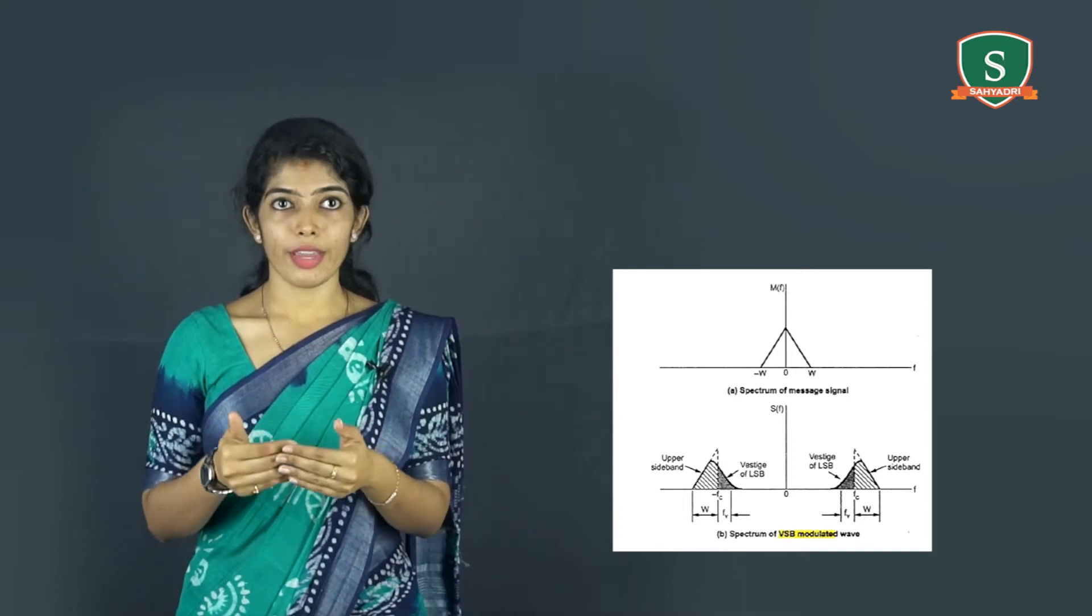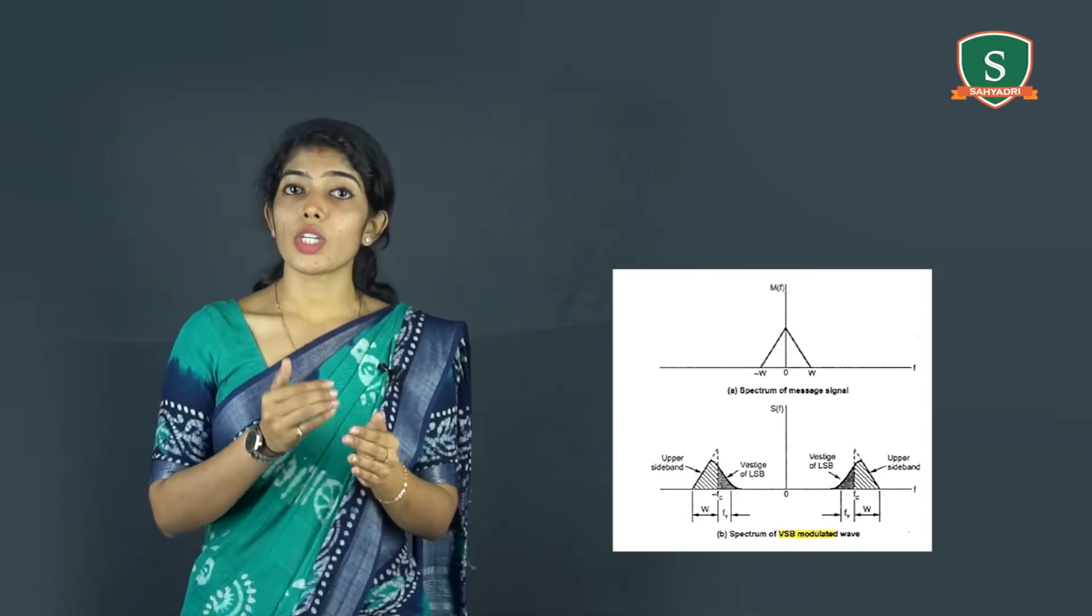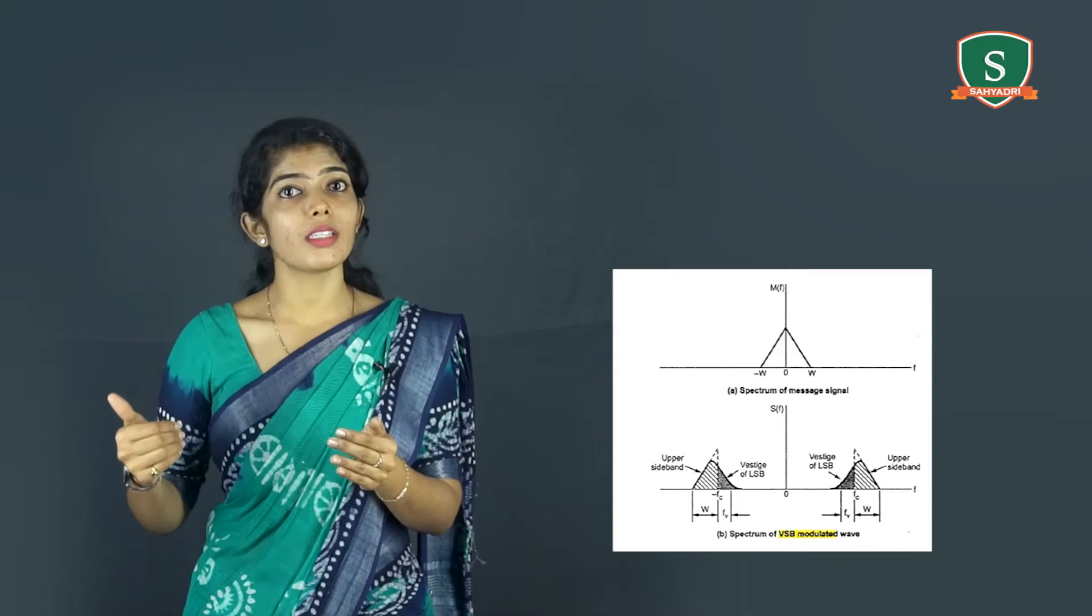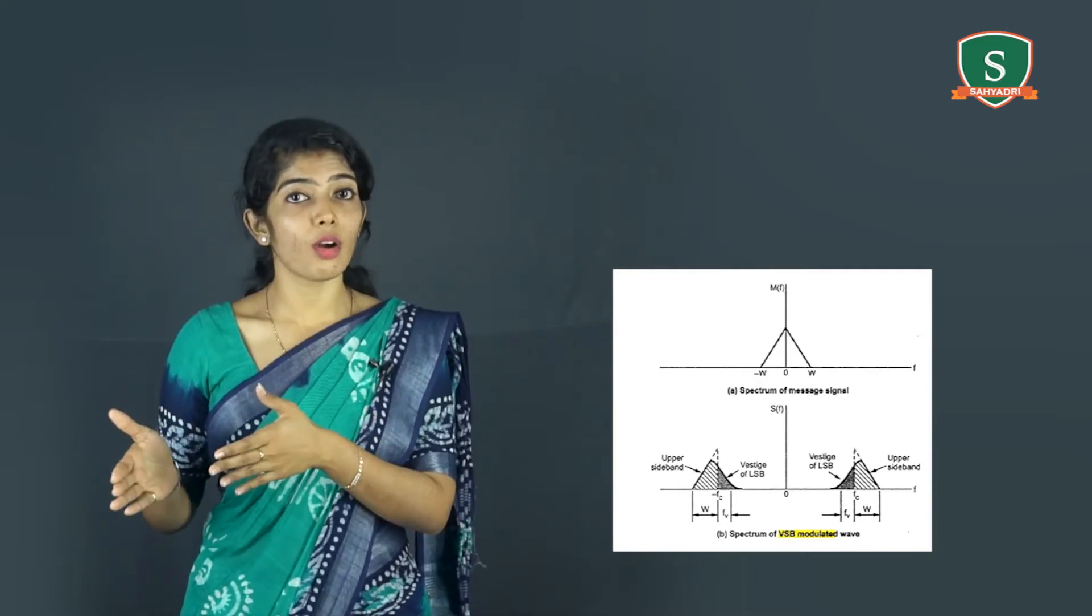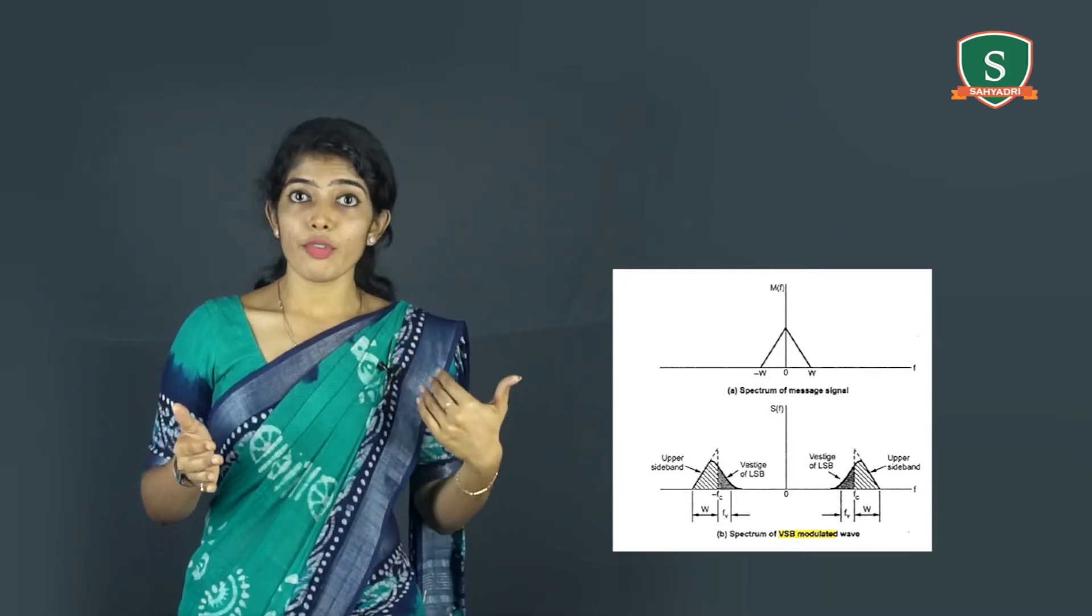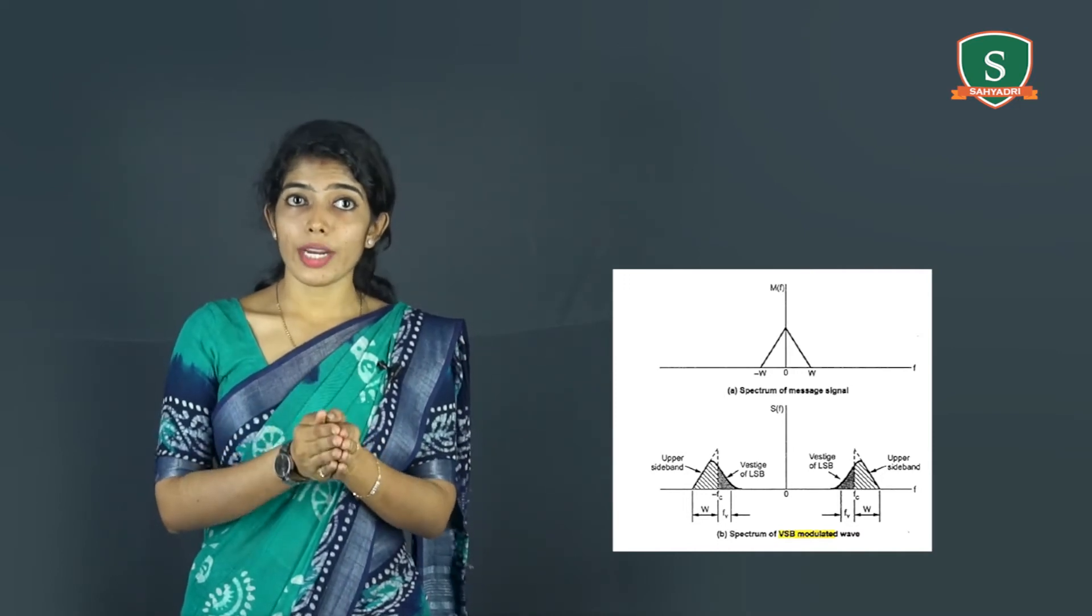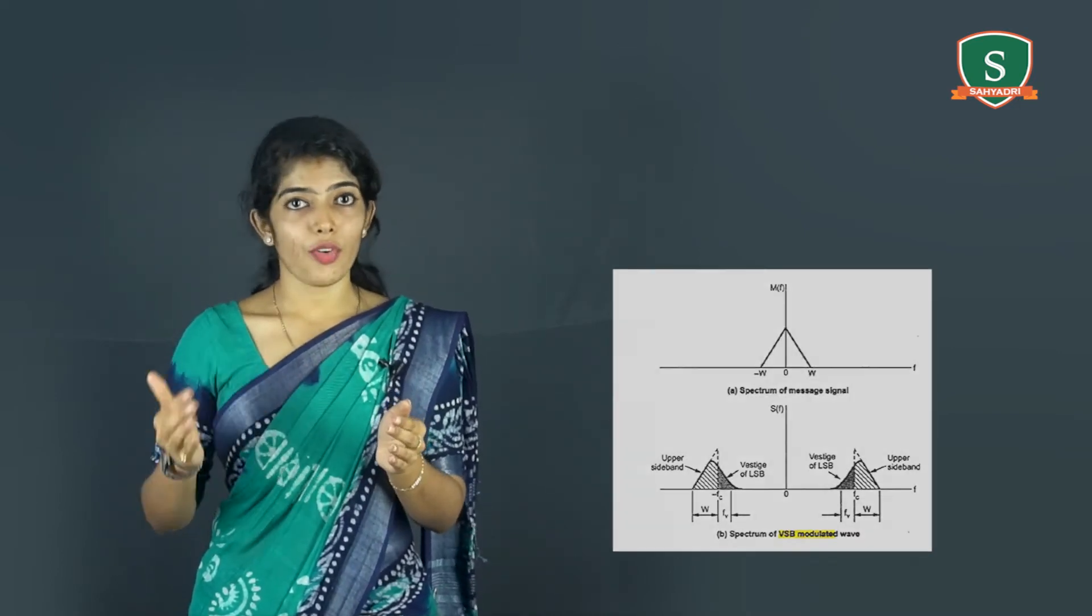The bandwidth of VSB modulated wave is given as bandwidth equals FV plus W, where W is the message bandwidth and FV is the width of the VSB. Since FV is much less than W, the VSB requires bandwidth almost equal to SSB transmission.